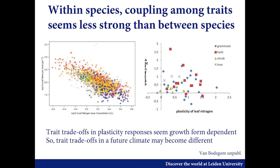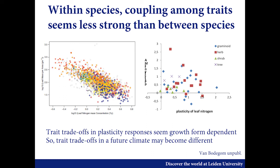Adaptation is harder to measure. We took Common Garden experiments where they transplanted populations of the same species, for which they knew how many years ago that population had been split. We calculated Darwin's coefficient and plotted this — this is the very first analysis thereof, highly preliminary — but it shows that genetic adaptation rates differ between traits. They may be completely decoupled, suggesting that some traits may be completely decoupled, and there also seems to be a very strong growth-form dependency. This again suggests that likely the trade-offs — whether hardwired or not — may be growth-form dependent and may change in a future climate.